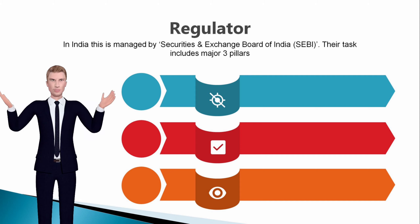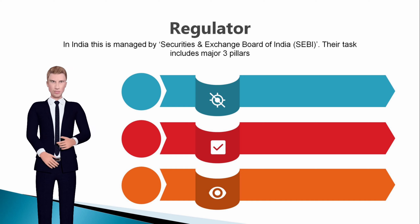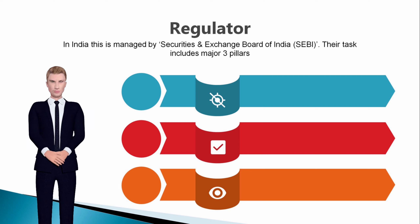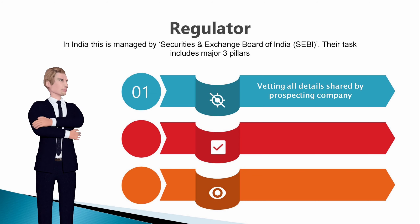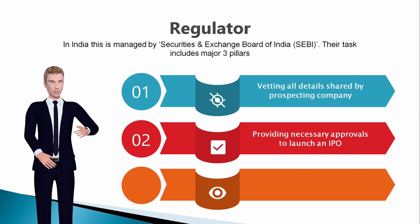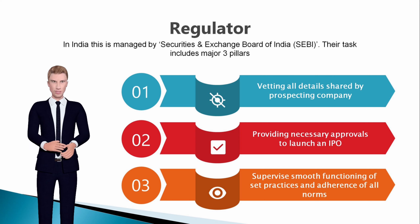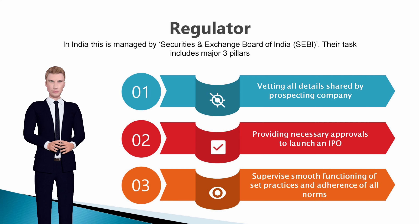Like any other process which requires good governance, we have regulators in place to look after IPO activities. In India this is managed by Securities and Exchange Board of India, SEBI. Their task includes three major pillars: vetting all details shared by the prospecting company willing to launch an IPO, providing necessary approvals to launch an IPO, and supervising smooth functioning of set practices and adherence of all norms during the IPO process to protect the interest of investors.